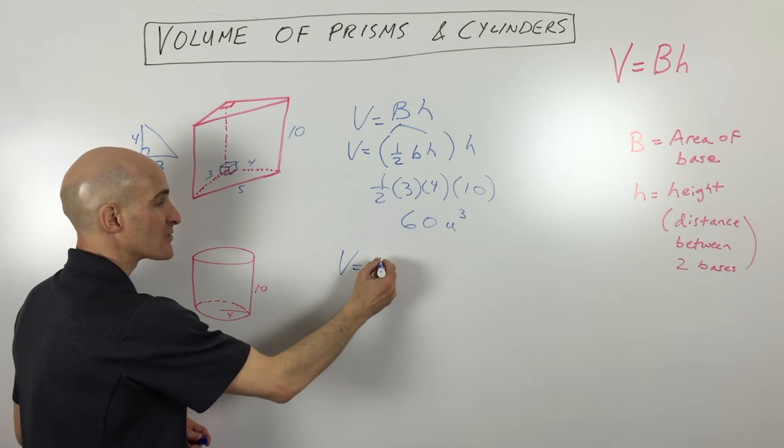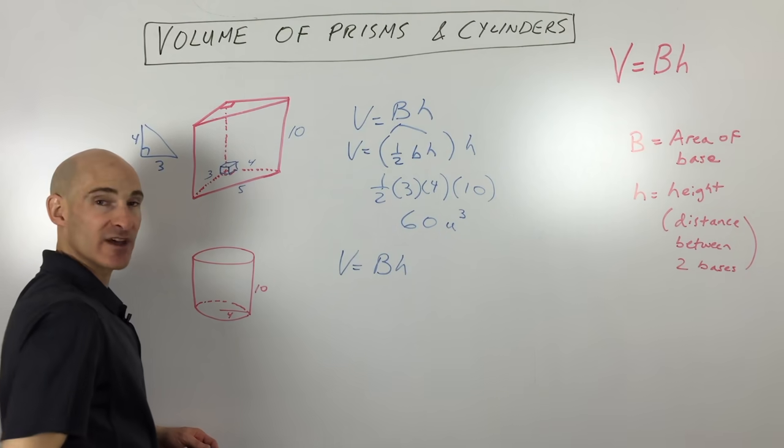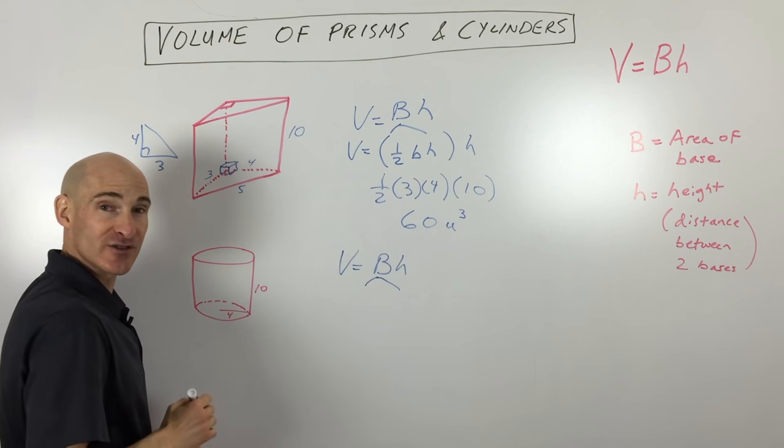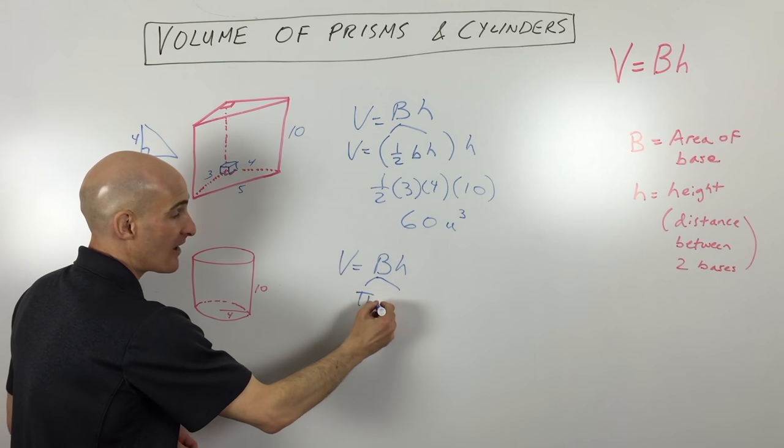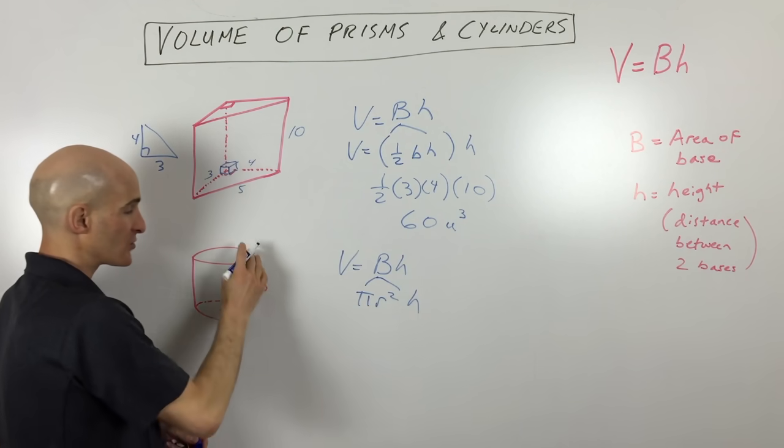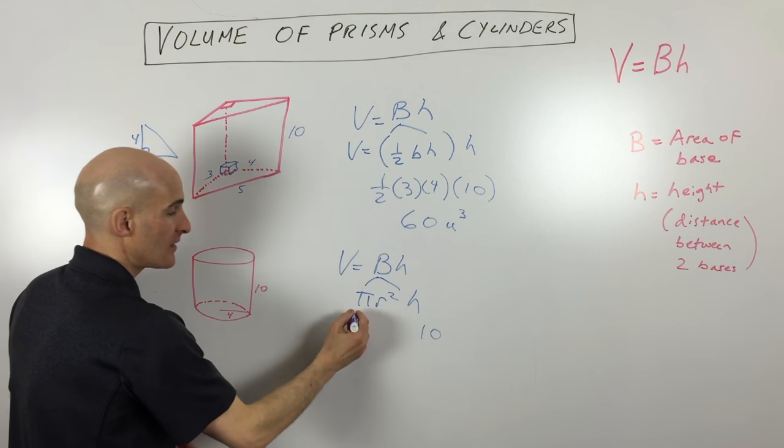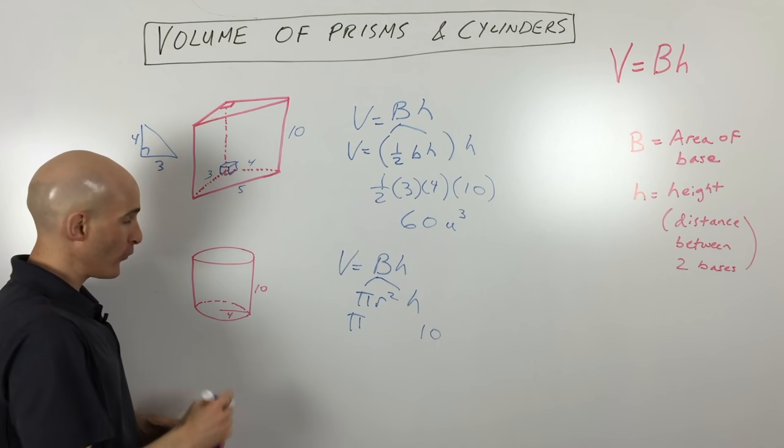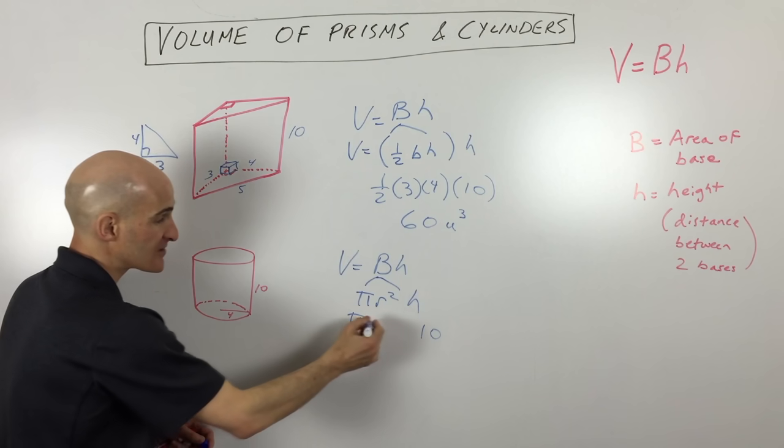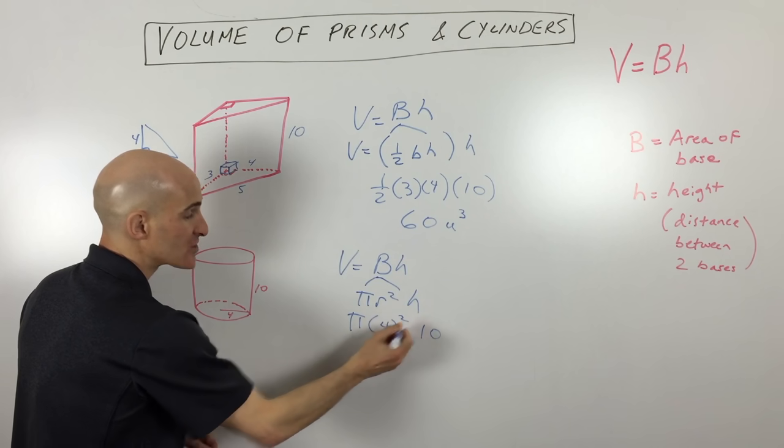Same idea. We're going to find the volume - it's the area of the base times the height. The base is a circle. What's the formula for area of a circle? It's πr². Then times the height. The overall height we know is 10. We know what pi is - it's 3.14. The radius is the distance from the center of the circle to a point on the circle. They give us that - that's 4, 4 squared.